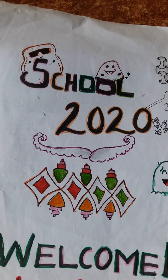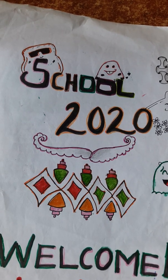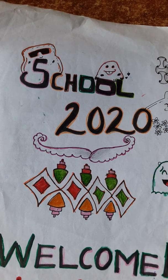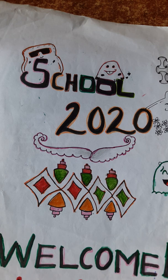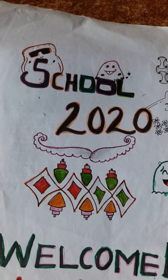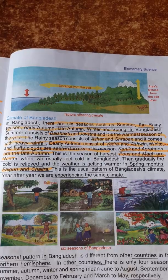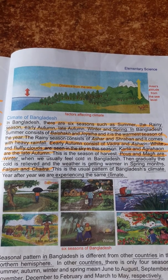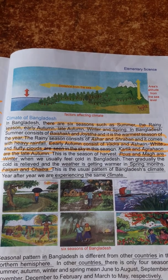Welcome to School 2020. Today we are in elementary science class 4, chapter 10, page number 76. In the last video we covered page 75 points. Today we have page 76, which is the first topic of the climate of Bangladesh.